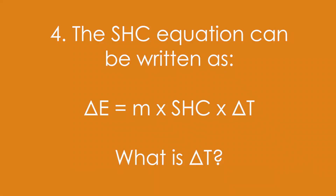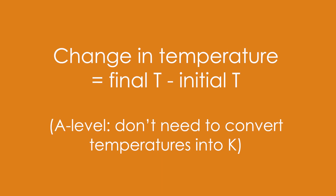Question 4: The specific heat capacity equation can be written as ΔE or Q = m × SHC × ΔT. What is ΔT? At A-level, you might see Δθ. Delta T is the change in temperature — that's final temperature minus initial temperature. At A-level, we're keen to convert into Kelvin, but for SHC we don't need to.